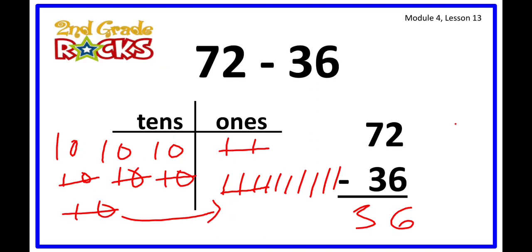72 minus 36. The same way we represent our 72 inside the chart. Because we can't remove 6 ones from 2 ones, we have to decompose a 10 from the tens side. Then we now remove our 6. After removing 6 ones from the ones side, we now have 6 ones remaining.